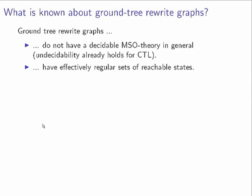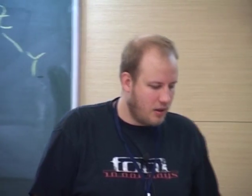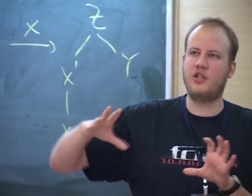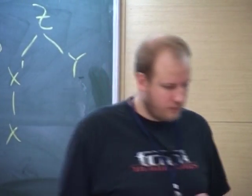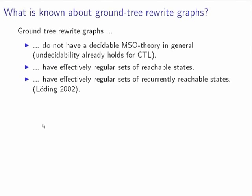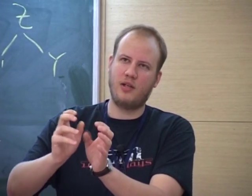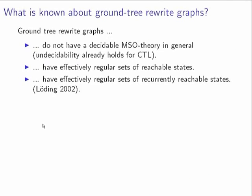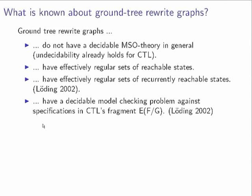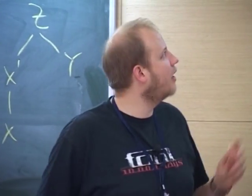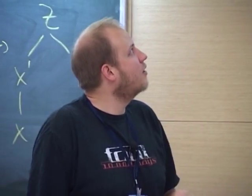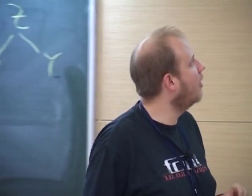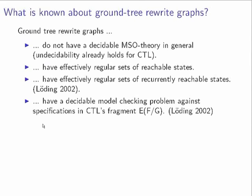On the positive side: if you're given a regular set of trees and would like to know the set of trees reachable from this set, then this set is again effectively regular. Moreover, the set of recurrently reachable trees from a regular set is also effectively regular. There is also a fragment of CTL which is decidable — if you restrict your until-formulas to have trivial left-hand sides, you get EF and EG formulas. From these results one can design the logic EF (exists-finally) and EG (exists-globally) such that this logic has a decidable model checking problem.